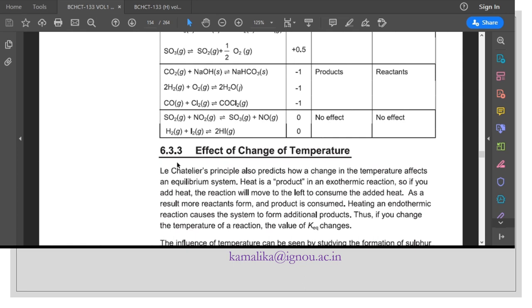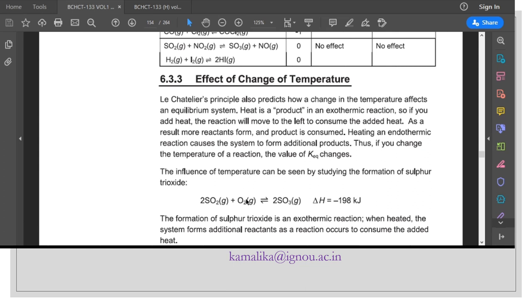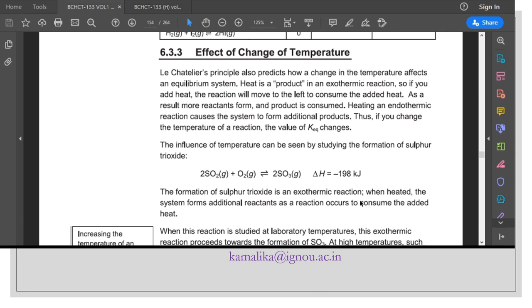Section 6.3.3, effect of change of temperature. If you increase the temperature, for example with the sulfur trioxide formation reaction, the formation of sulfur trioxide is an exothermic reaction.